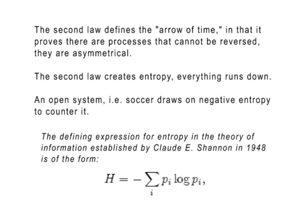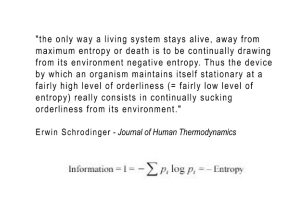Motion must unfold along a continuous line from start to finish. This brings us to the global view of time — the second law of thermodynamics, also called the arrow of time. The law contains two global or operational constraints: it is asymmetrical and produces entropy.